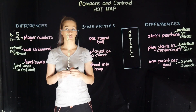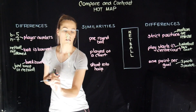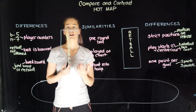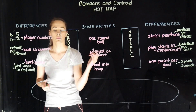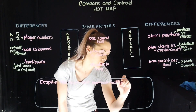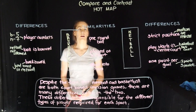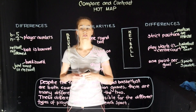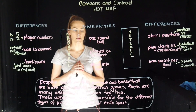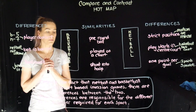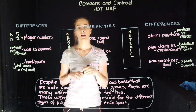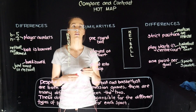And then we go on to our extended abstract level, finally at the bottom. Extended abstract level is when you take the information and make a statement around that. So that would be: 'Despite the fact that netball and basketball are both court-based invasion games, there are many differences between the two. These differences are responsible for the different types of player required for each sport.' So I've made a statement that brings it all together, resulting in the extended abstract level of understanding.